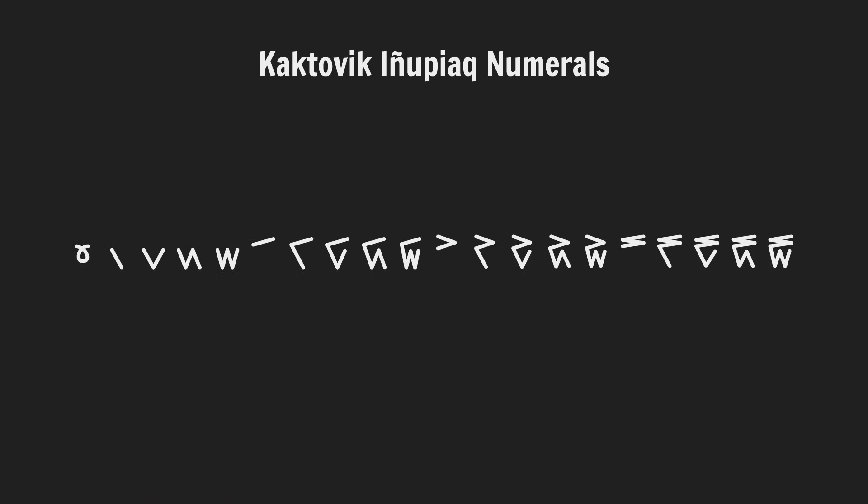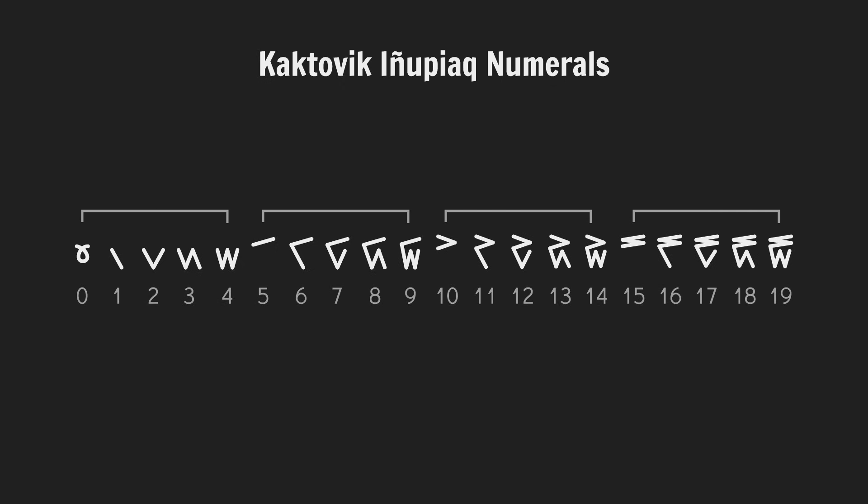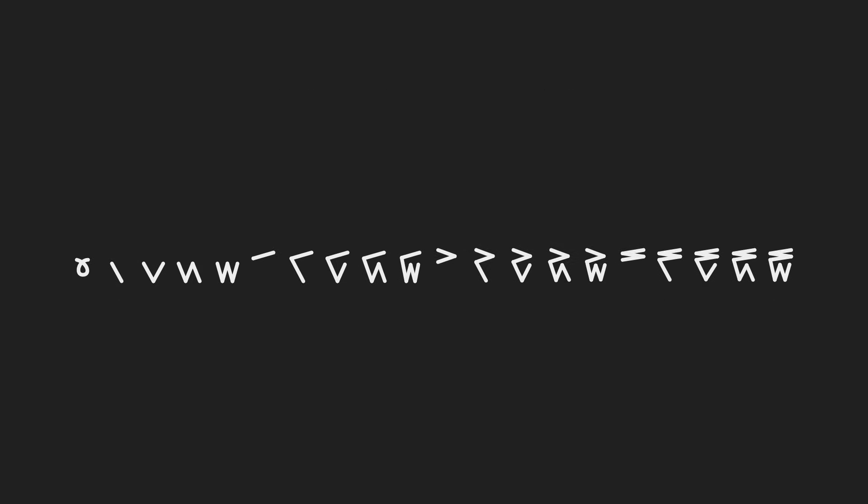These are the Kaktovik Inupiaq numerals and they are simply awesome. The system is base 20 overall with a sub-base of 5 going on. The killer feature though is that there is a clear relationship between the symbols and their meanings — each symbol is a little pictogram of the value it denotes.